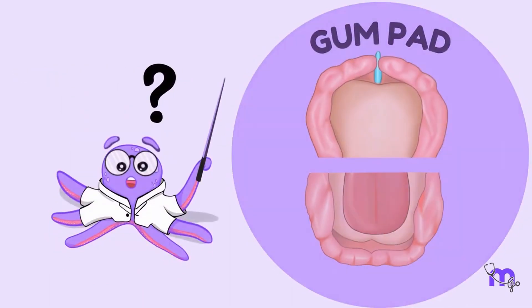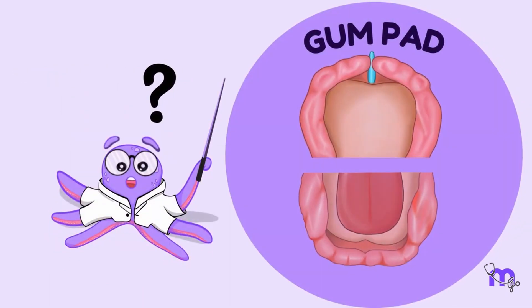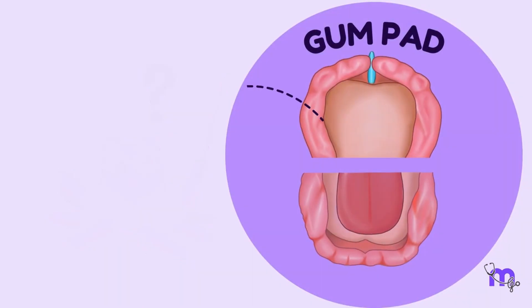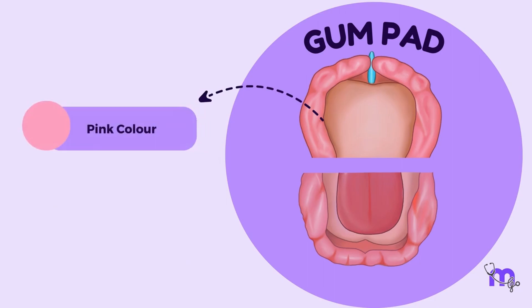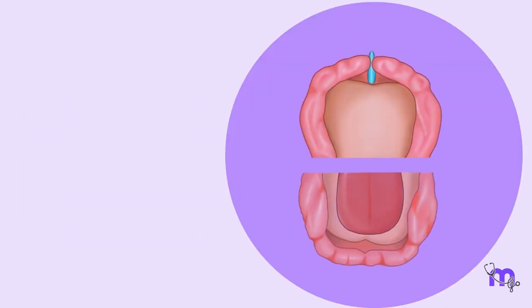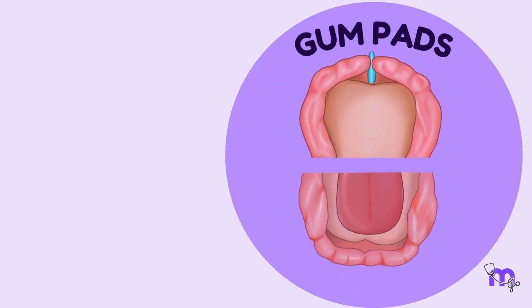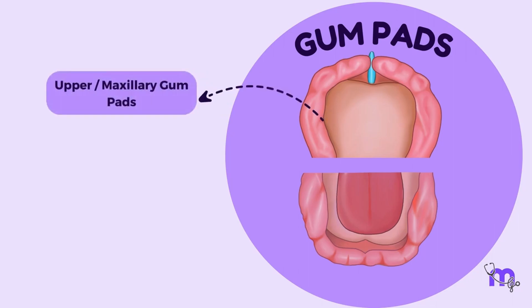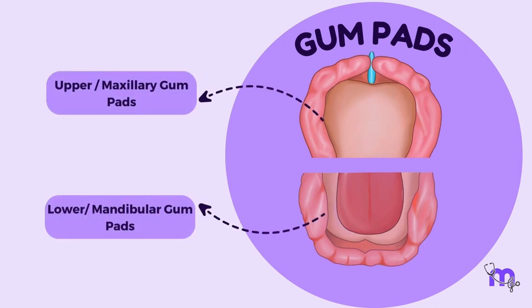A healthy gum pad is pink in color, firm in consistency, and definite in form. The oral cavity comprises a pair of gum pads: the upper or maxillary gum pad, and the lower or mandibular gum pad.